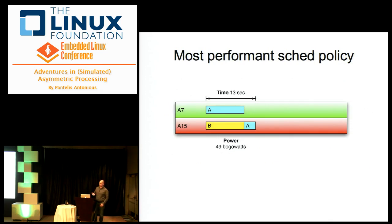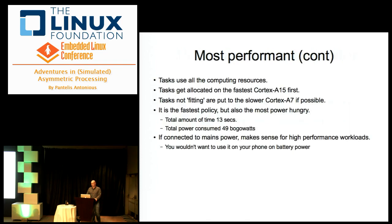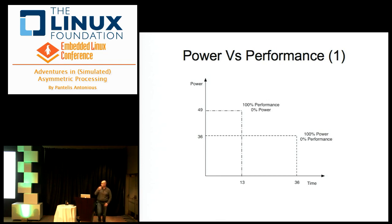If you try to run as fast as possible, you fill up all the capacity of the A15 and use the A7 only when the A15 is unavailable. Packing tasks that way, it takes only 13 seconds to run, consuming 49 BOGO watts. This is the fastest policy — what you want when connected to mains power or running high-performance workloads, but not on your phone or tablet. If you chart these two extremes, you have one axis for power and one axis for time taken.